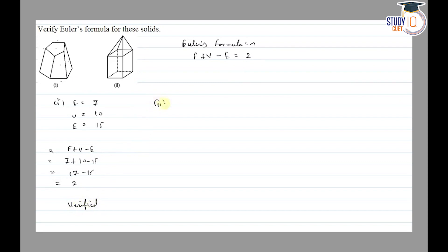For the second solid, faces: 1, 2, 3, 4, 5, 6, 7, 8, and bottom is 9. Then vertices: 1, 2, 3, 4, 5, 6, 7, 8, and 9. Then edges: 1, 2, 3, 4, 5, 6, 7, 8, 9, 10, 11, 13, 14, 15, 16.